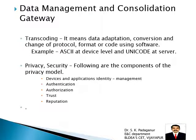Transcoding means data adaptation, conversion, and change of protocol format or code using software. It adapts data, converts it from one format to another, and changes protocols — for example, IPv4 to IPv6 or IPv6 to IPv4. The format gets changed. For instance, at the device level we may use ASCII data, but the server uses Unicode. When ASCII code arrives at the gateway, it converts ASCII to Unicode and sends it to the server. Transcoding is a very important function of the gateway.